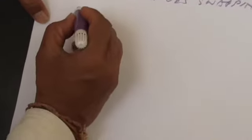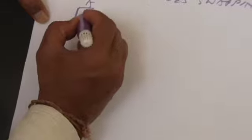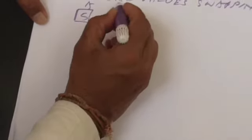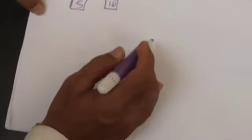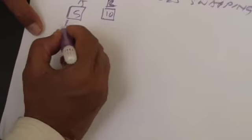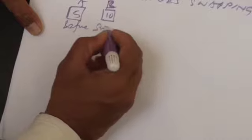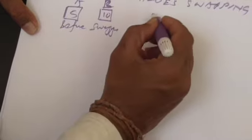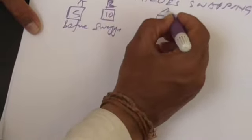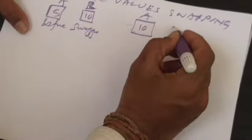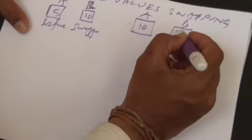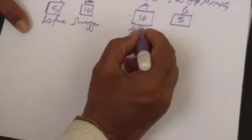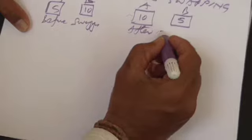As I said, suppose A contains value 5 and B contains value 10 — this is before swapping. After swapping, you want A to contain value 10 and B to contain value 5.